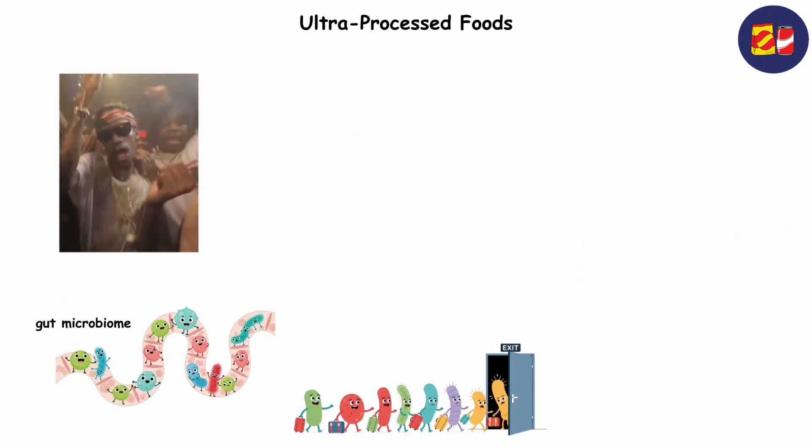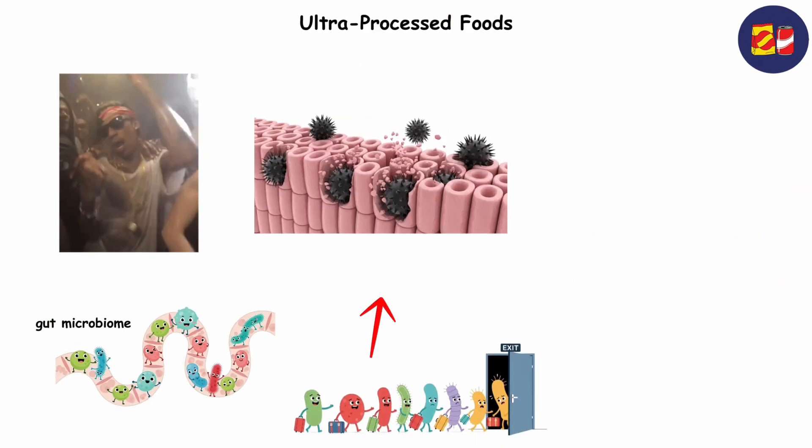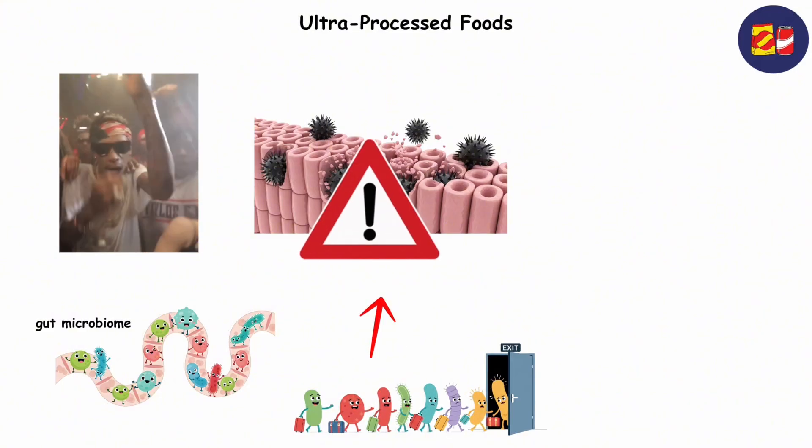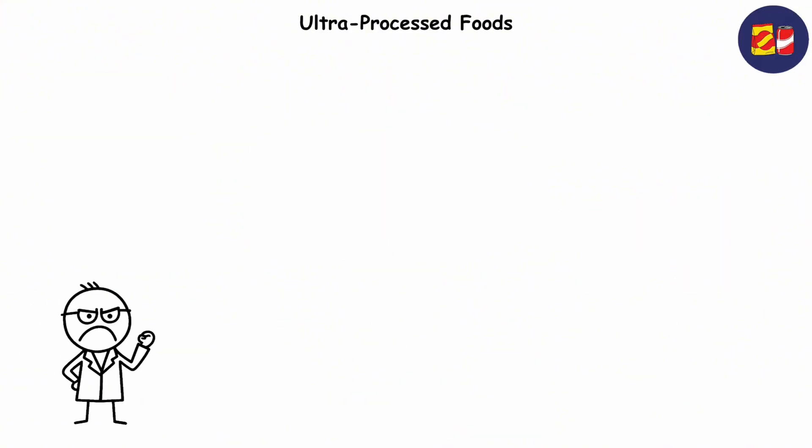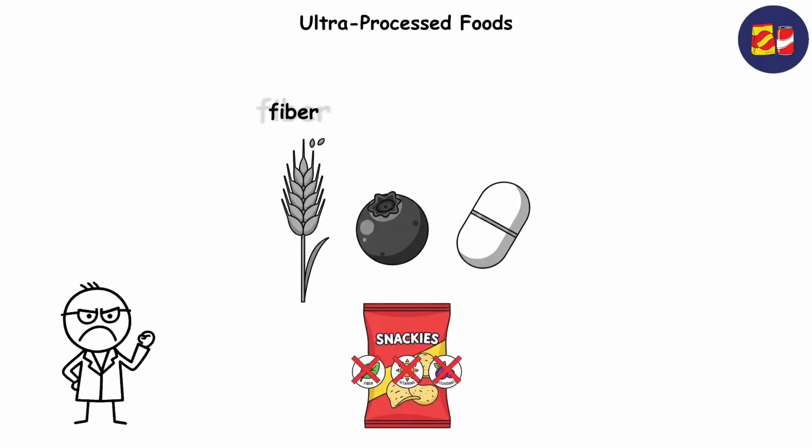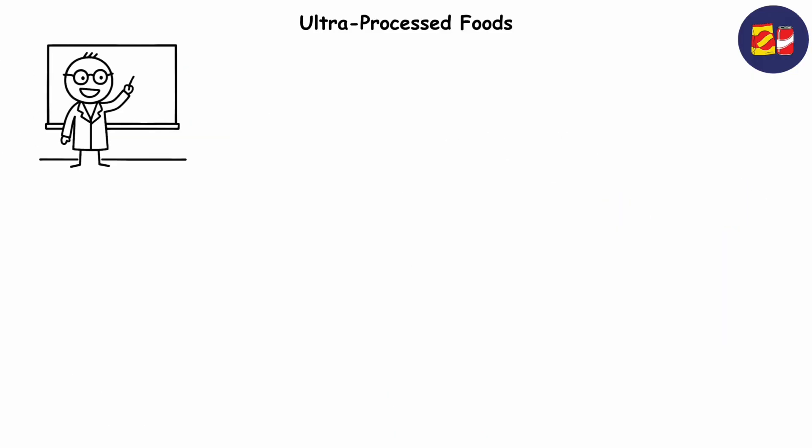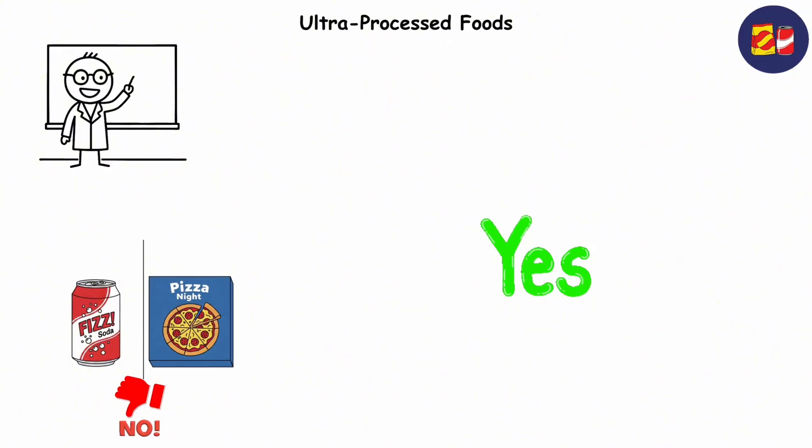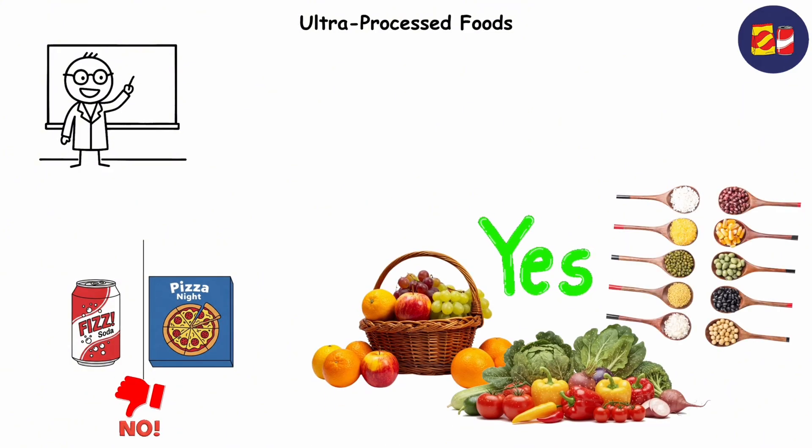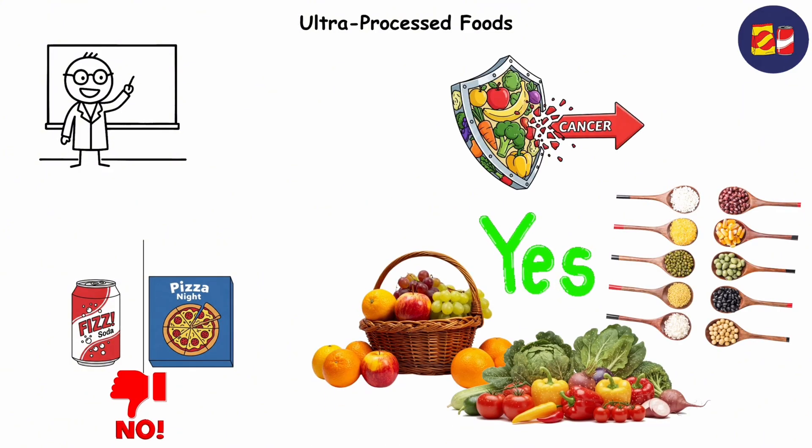And when the good bacteria leave the chat, toxins can sneak past your gut's defenses, upping risks for cancers like colorectal cancer. What's worse is these foods lack the good stuff. Fiber, antioxidants, and nutrients that help repair DNA damage. Bottom line? Swapping soda and frozen pizza for fresh fruits, veggies, and whole grains isn't just a diet change. It's cancer defense one meal at a time.